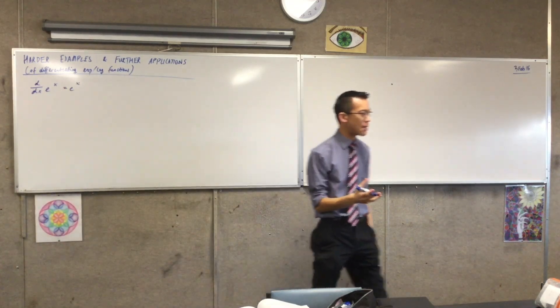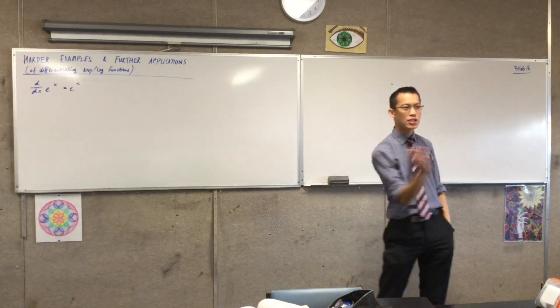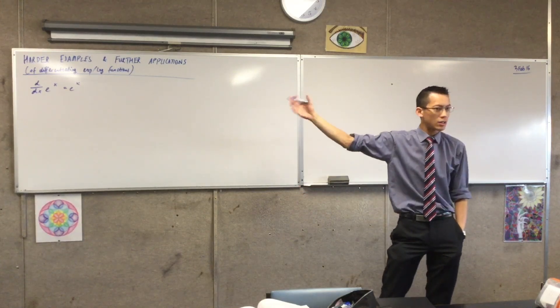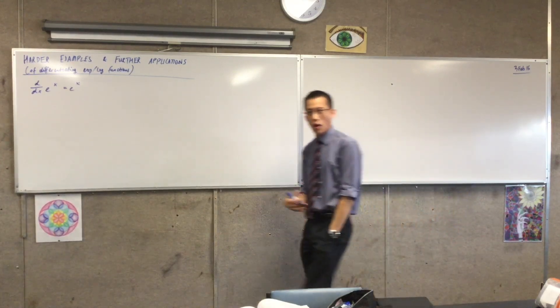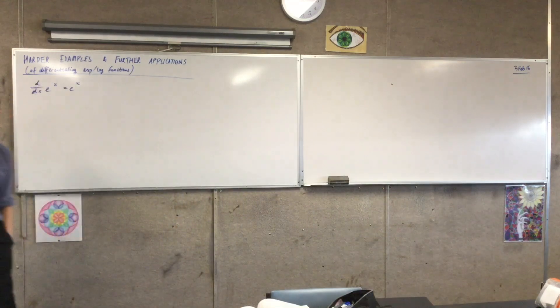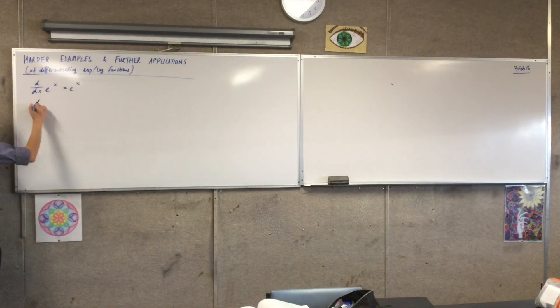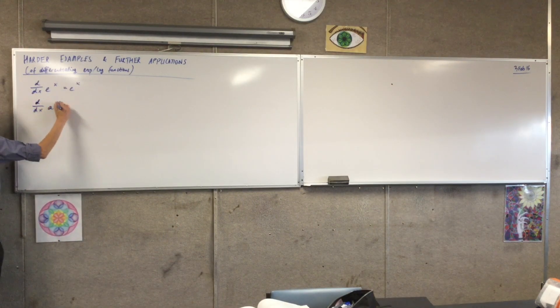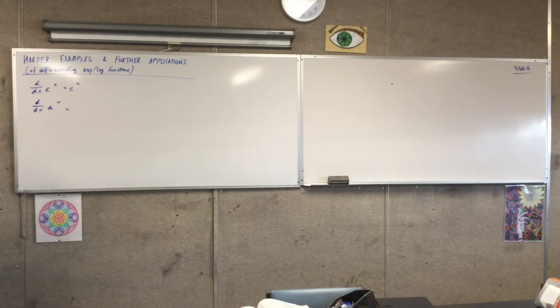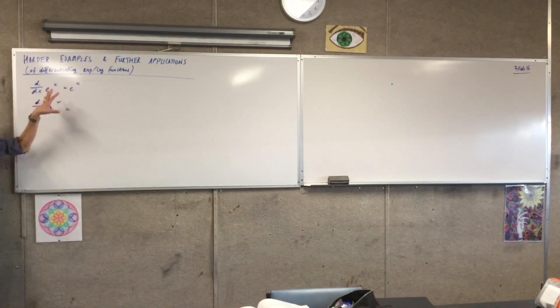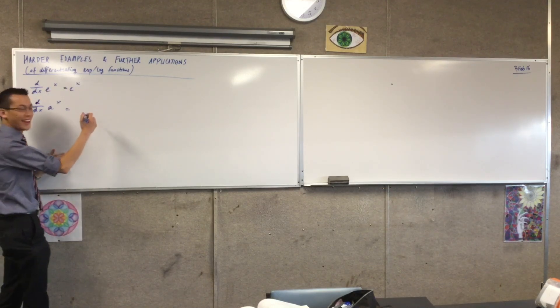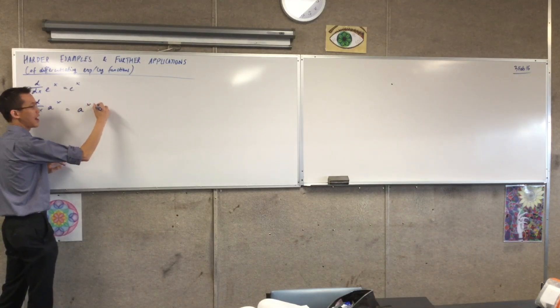Now from that, we took that as our basis to say, well you know what, e is a special base. Once you know what that is, once you set it in stone, you can work how to do it for an exponential function with any base, right? So we said if it's a to the x, where a is some real number, then the derivative is very similar. What's the difference? It's a to the x times log a.